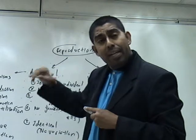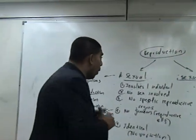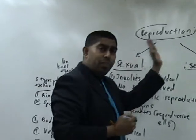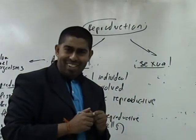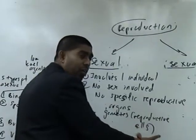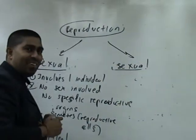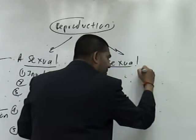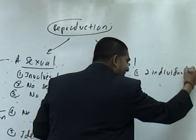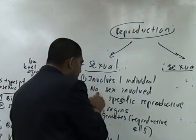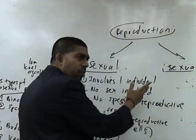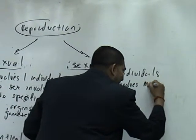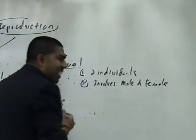I just want to quickly give you the opposite of asexual reproduction, which is sexual reproduction. If you remember all the points for asexual reproduction, the reverse would apply to sexual reproduction. For example, if asexual reproduction involves only one individual, then sexual reproduction involves two individuals. And if asexual reproduction involves no sex, then sexual reproduction involves male and female — two opposite sexes.